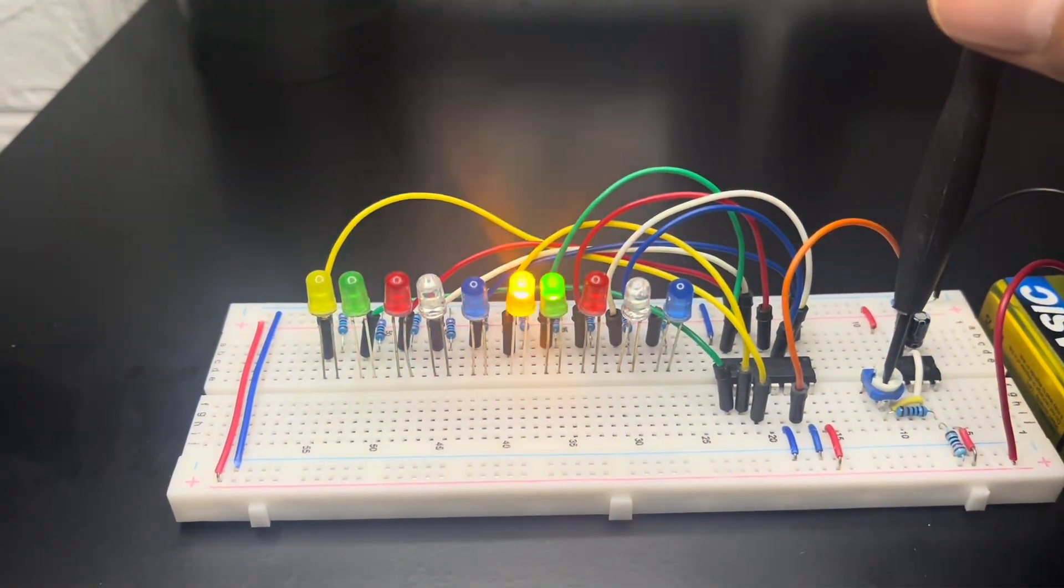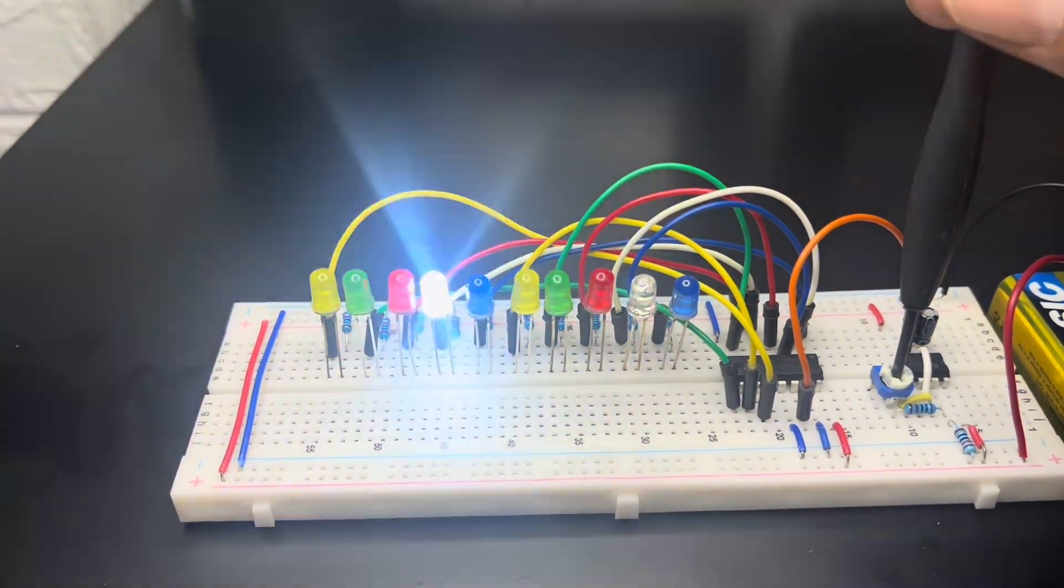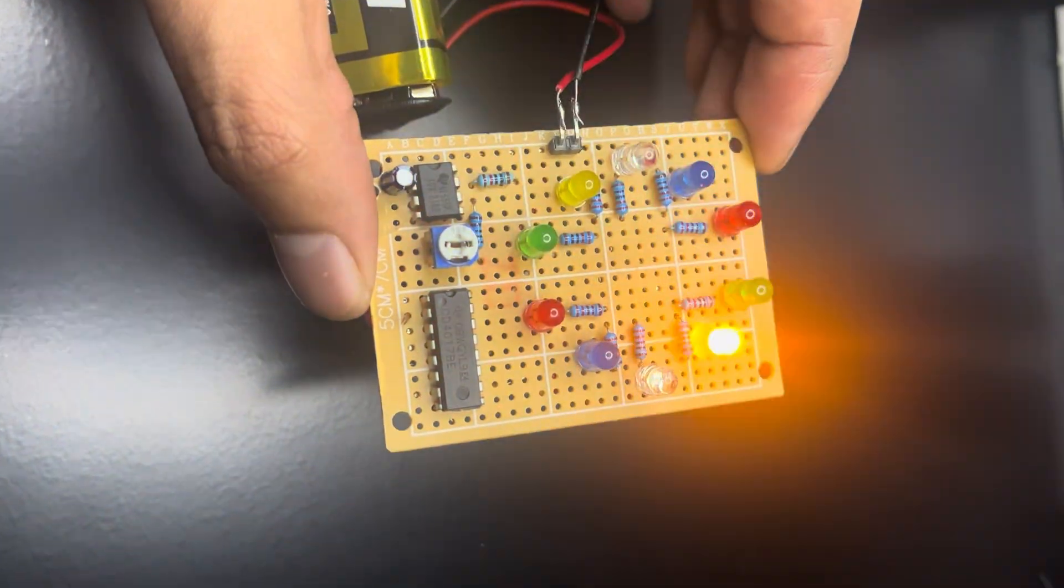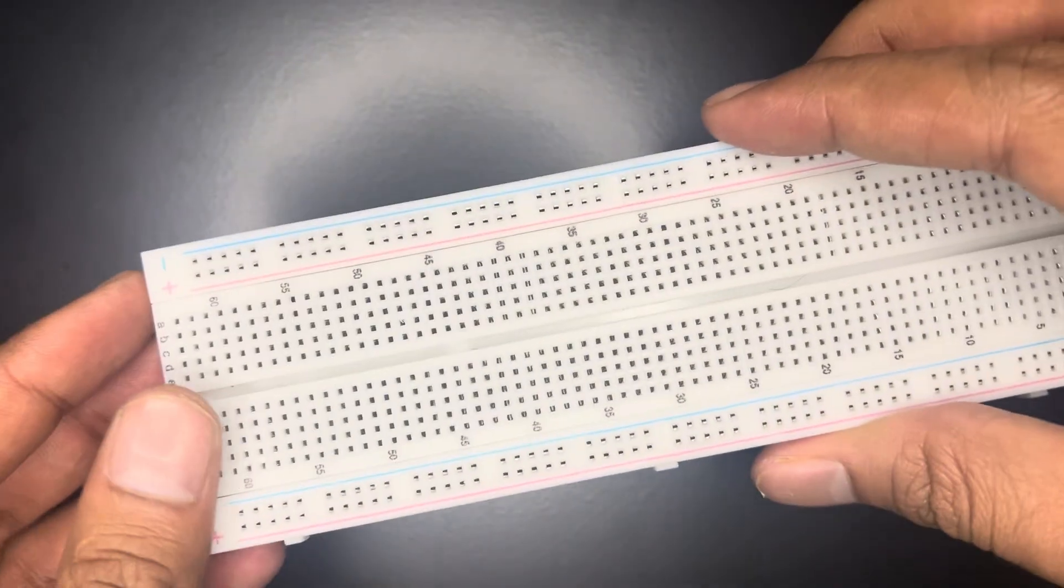The speed of the running LEDs can be controlled by a potentiometer. We can build it on a small PCB but let's build it on a breadboard first.